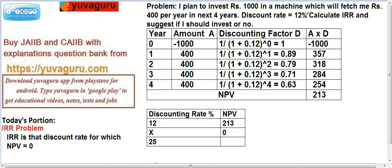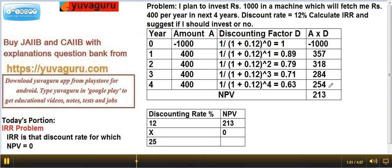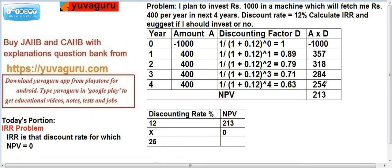The discounting factor is 1 upon (1 + 0.12) raised to 0 for year 0, which comes out to be 1, then raised to 1, 2, 3, and 4 for subsequent years. We then get the present value of Rs.400 for each year. As we go higher, the present value decreases. After getting the present values we add them up and subtract from 1000 to get the net present value. NPV represents what I spent versus what I got. The total NPV at 12% comes out to be 213.